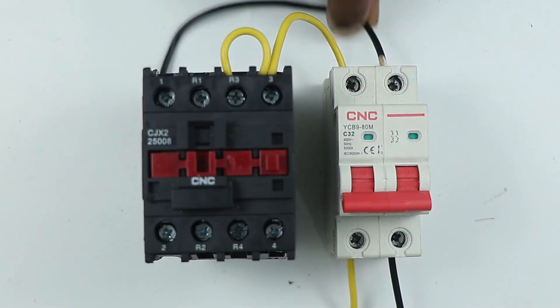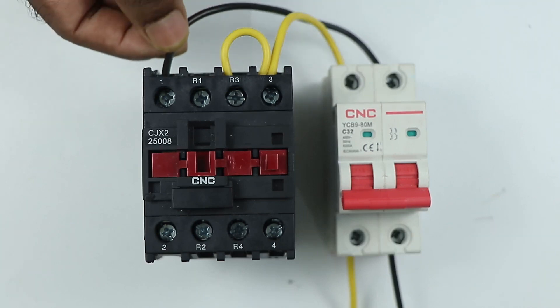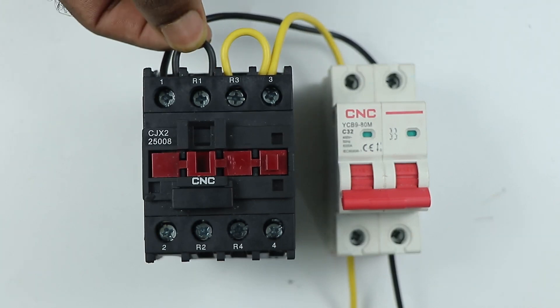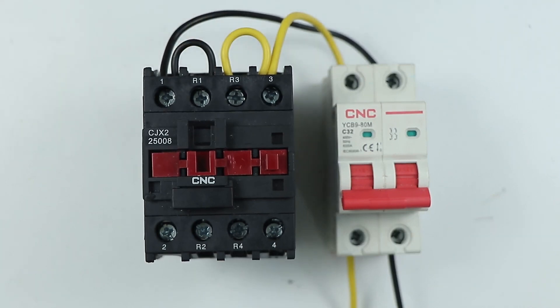Similarly from neutral point of MCB, provide neutral supply to NO contact and NC contact of contactor. You can see how connection is done here.